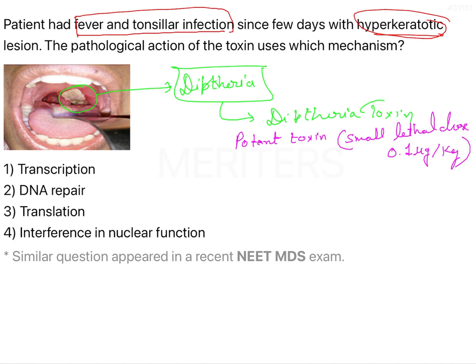The diphtheria toxin has a virulence factor responsible for local effects and systemic complications. This is coded by a gene known as the tox gene — very important for exams — and this is a beta phage encoded gene.